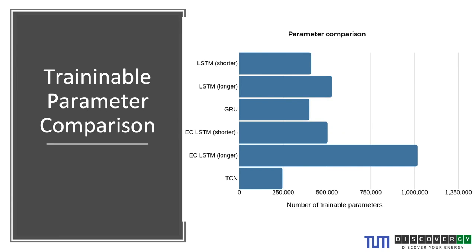Rather than discussing accuracy measures, which depend heavily on different settings, input lengths, and many other factors, what is more interesting in an industrial setting is optimizing operational costs — the costs incurred with training and testing models. Here is a comparison of the number of training parameters, since the number of parameters affects the time taken to train a particular model.